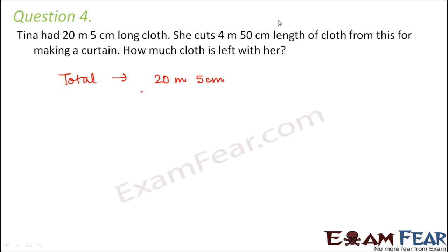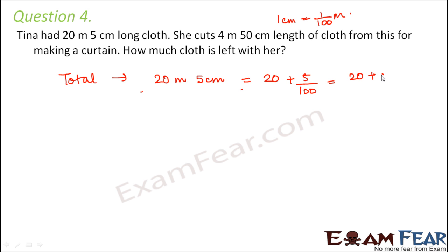We know that 1 centimeter is equal to 1/100 meters. So 20 meters 5 centimeters becomes 20 plus 5/100 meters, which is 20 plus 0.05, equal to 20.05 meters. This is the total amount of cloth she had.